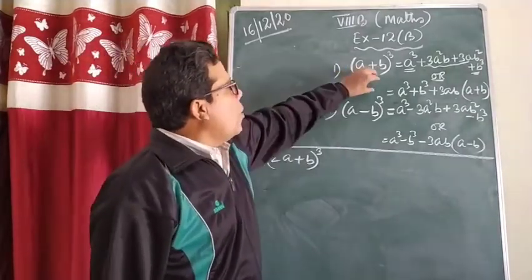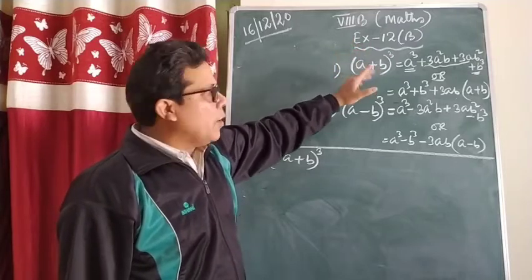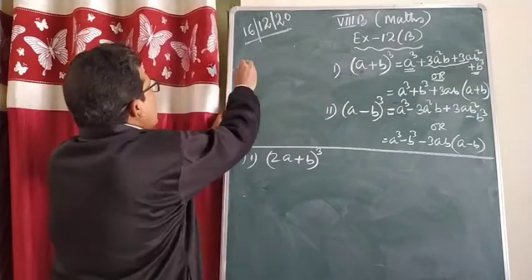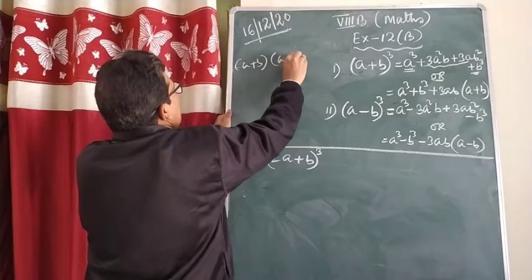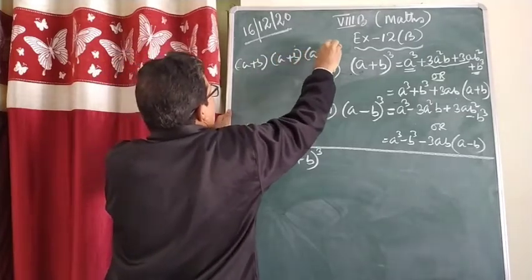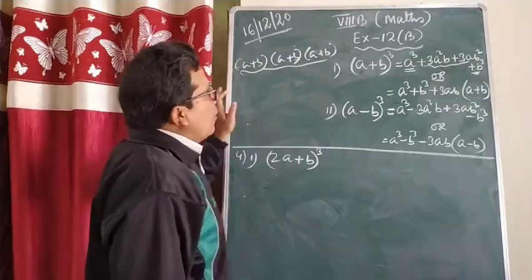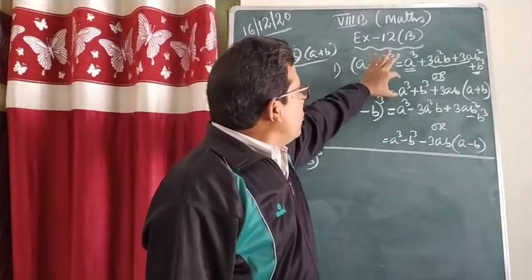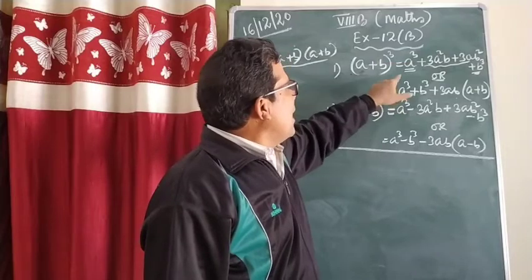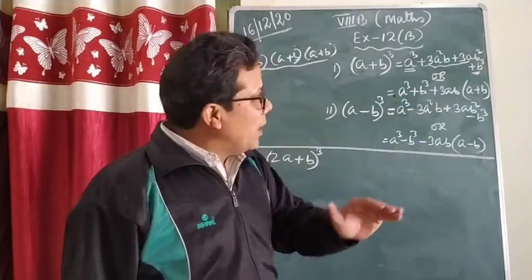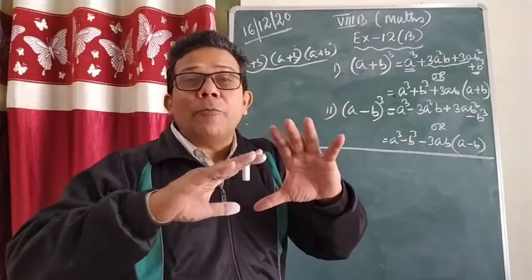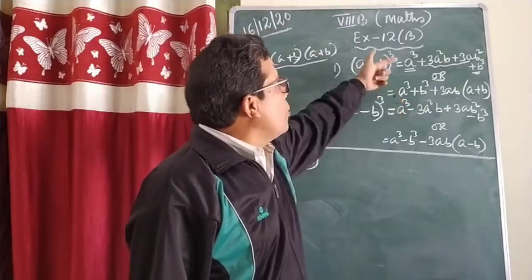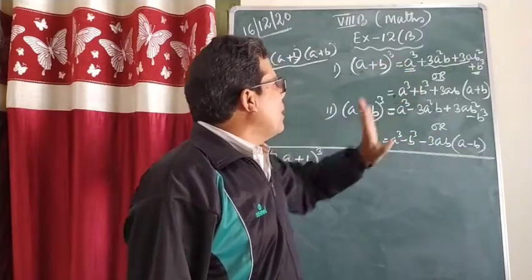If you have any doubt, you can verify it by multiplying (a+b) × (a+b) × (a+b) three times — you will definitely get this result. Certain problems require the second form, and certain problems require the first. That is why both are the same, and you remember both. If you remember one, you can easily get the other by taking common factors.